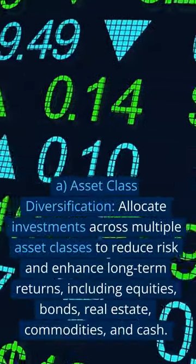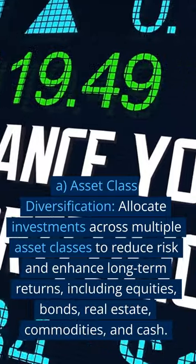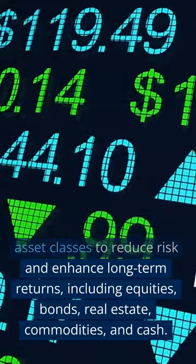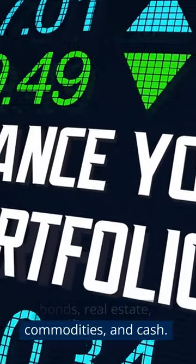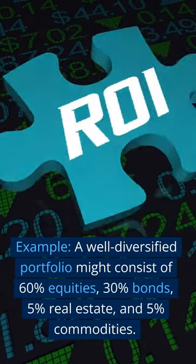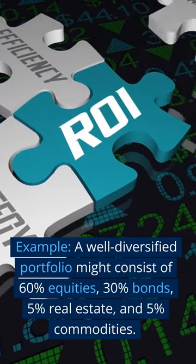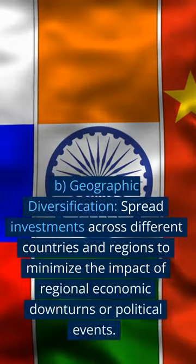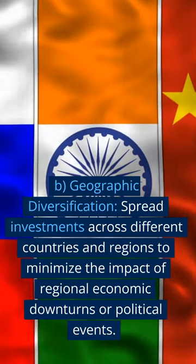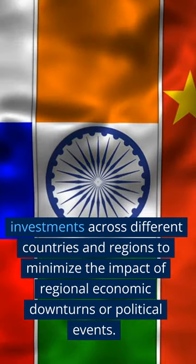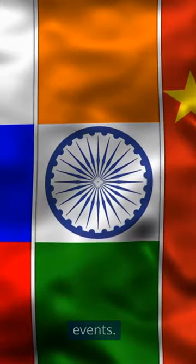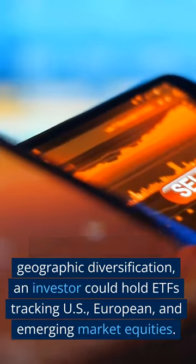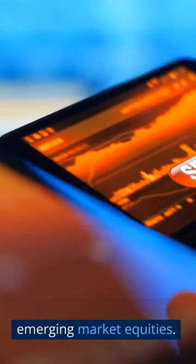3. Diversification. A. Asset class diversification. Allocate investments across multiple asset classes to reduce risk and enhance long-term returns, including equities, bonds, real estate, commodities, and cash. Example: a well-diversified portfolio might consist of 60% equities, 30% bonds, 5% real estate, and 5% commodities. B. Geographic diversification. Spread investments across different countries and regions to minimize the impact of regional economic downturns or political events. Example: to achieve geographic diversification, an investor could hold ETFs tracking US, European, and emerging market equities.